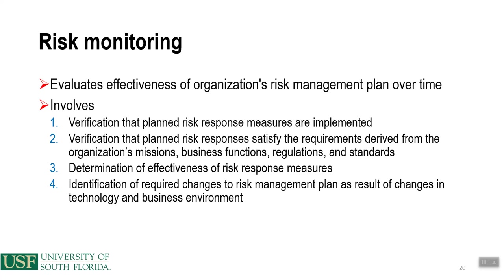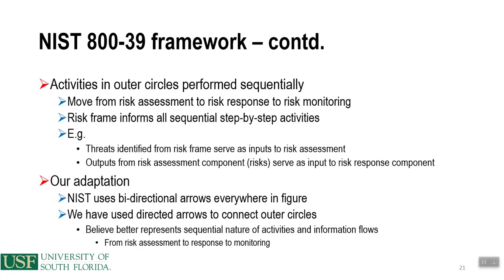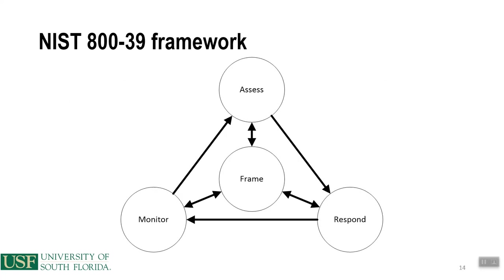Risk monitoring also focuses on identifying required changes to the risk management plan as a result of changes in technology and business environment. It's not enough to set the risk framework in place — you need to monitor it on an ongoing basis. Activities in the outer circles are performed sequentially: from risk assessment to risk response to risk monitoring. The framing sets the entire context, then we assess risks, respond to them accordingly, and monitor them. This continues on a cyclic basis but must be done in this particular order.